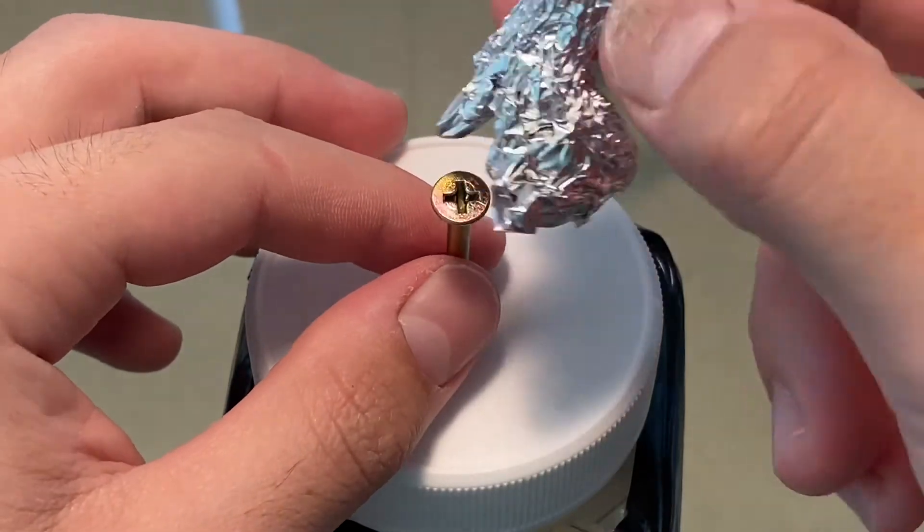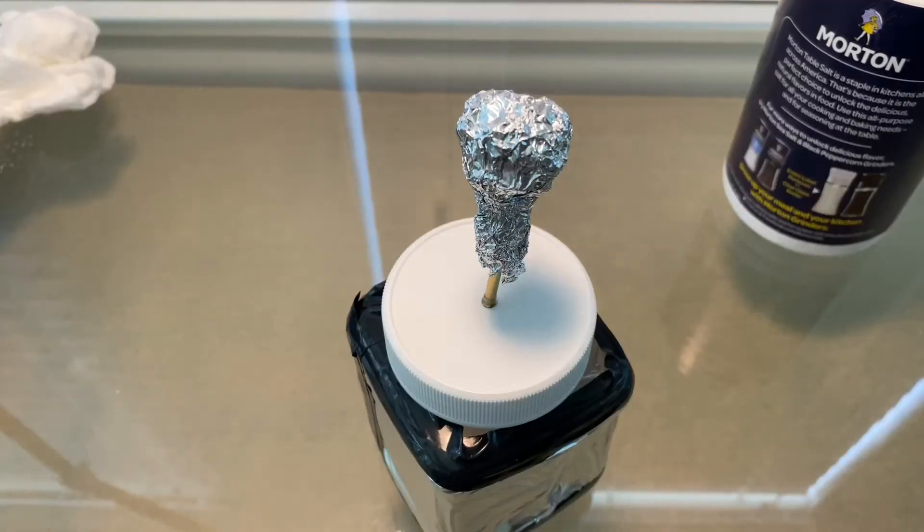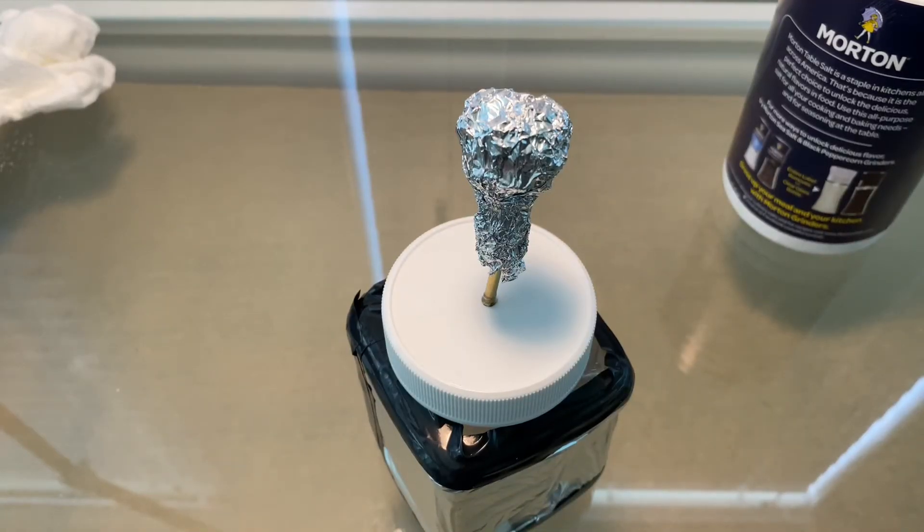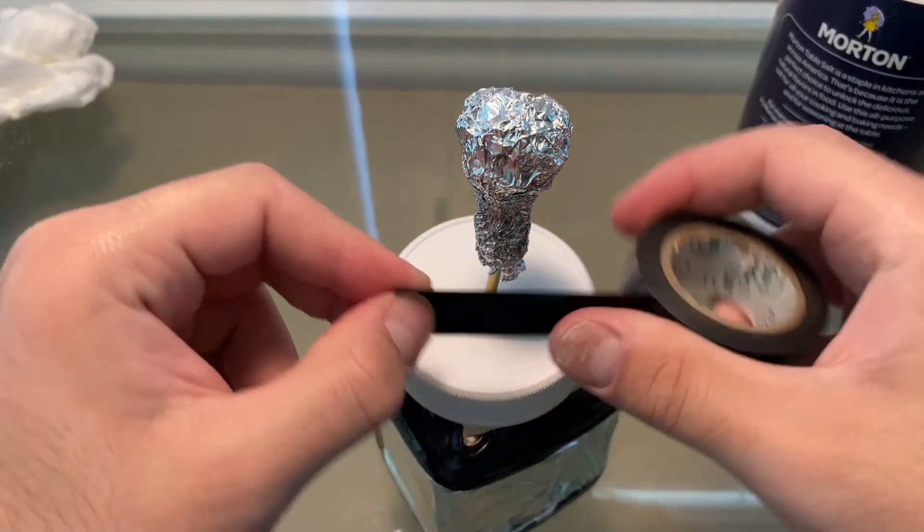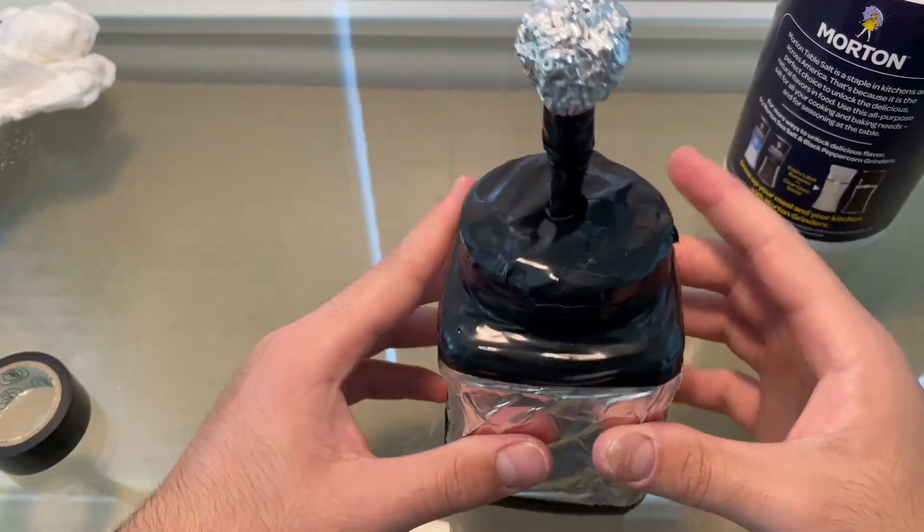Now you want to take this part, stick it on top of the screw, and kind of like lock it in place. It should look kind of like this. And then you want to add electrical tape. Don't be afraid to add more. And ta-da! Here it is!